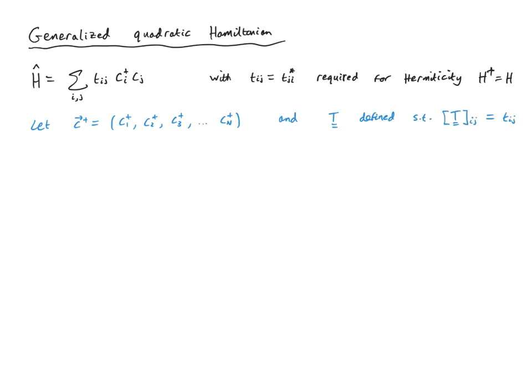We introduce a vector operator c†-vector containing all creation operators c_1†, c_2†, ..., c_N†, allowing us to write Ĥ = c†·T·c compactly. We perform a canonical transformation from the c's to the f's via a unitary matrix U (U†U = I), so that U†TU = D is diagonal. A canonical transformation preserves the fermionic anticommutation relations; if U is unitary, the f-operators satisfy the proper canonical anticommutation relations if the c-operators do. We wish to find the specific U that diagonalizes the Hamiltonian operator.